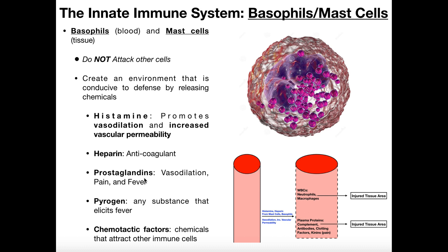Basophils and mast cells also release prostaglandins. Prostaglandins are a type of eicosanoid, a type of hormone, and they promote vasodilation in a similar way to histamine, but they also promote pain and fever. Fever is also promoted by substances called pyrogens — any substance that elicits fever. We tend to think of fever as a bad thing, but fever where our body elevates its temperature actually helps fight the infection. Many immune substances have higher activity when temperature goes up, and bacteria have a harder time surviving when temperature increases, so our metabolic rate increases to create an environment that helps fight the infection.